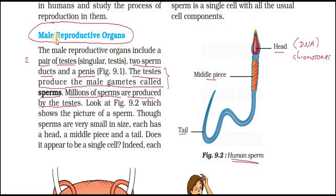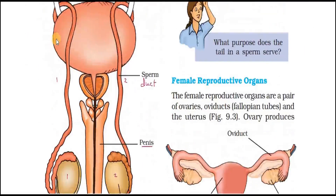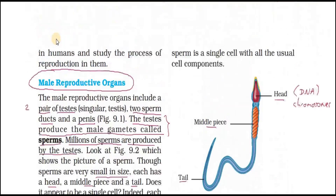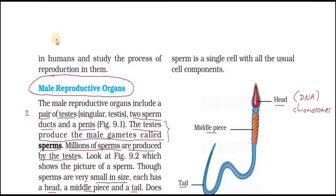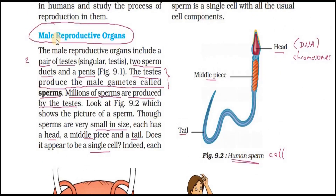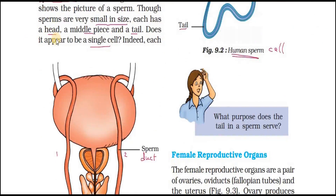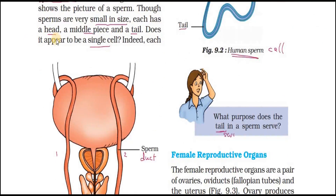Sperms are very small in size but their structure has a head, a middle piece, and a tail. Each sperm is a single cell with all the usual cell components found in an animal cell. The purpose of the tail in a sperm is to help it swim or move forward, because the sperm has to travel to fertilize the egg.